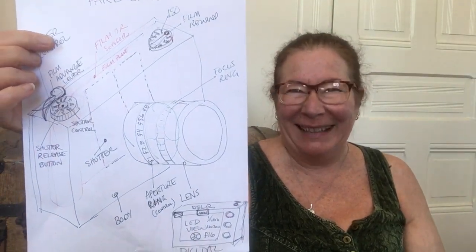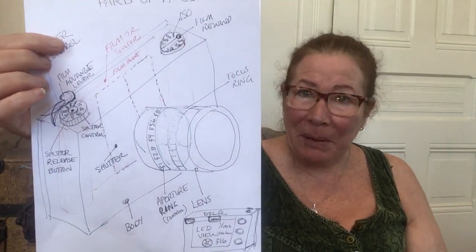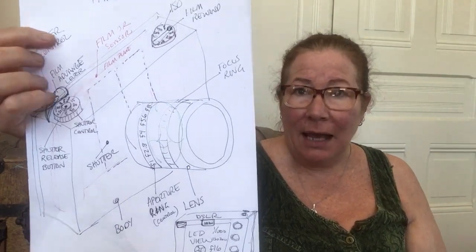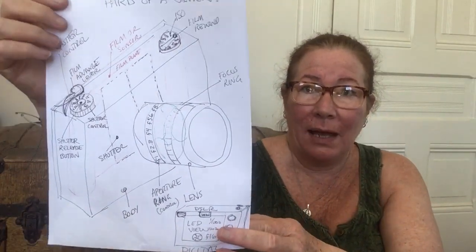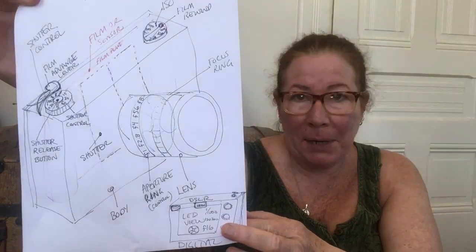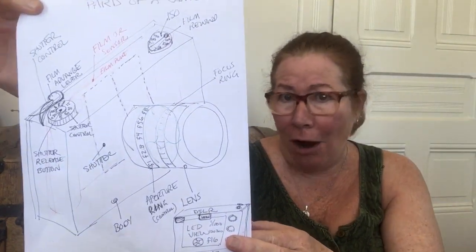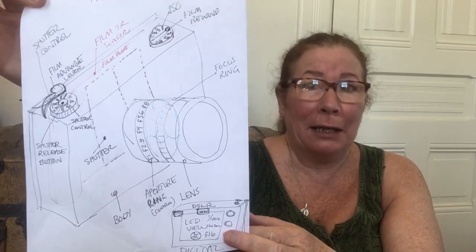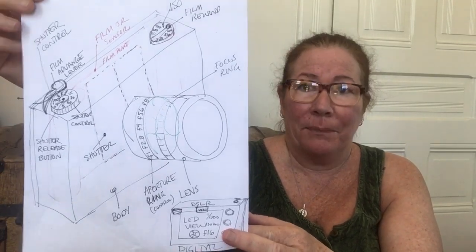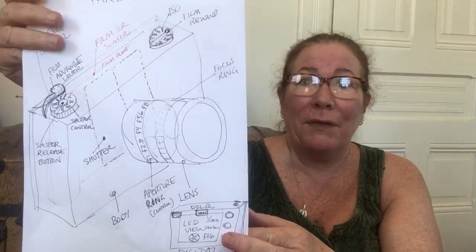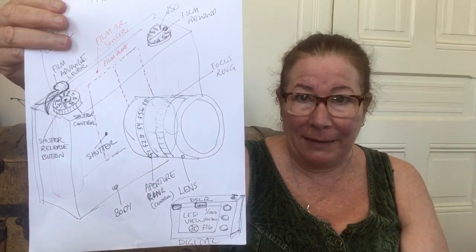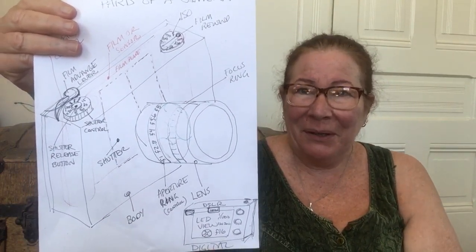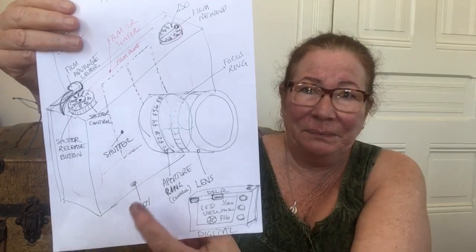Now we come to a little bit more complicated territory, but it's not really complicated. The parts of the camera are actually pretty simple compared to, say, a car engine. If you can understand a little bit about a car engine, you can understand a camera without any problem — or even a bicycle. If you know the parts of a bicycle, you can understand the parts of a camera.